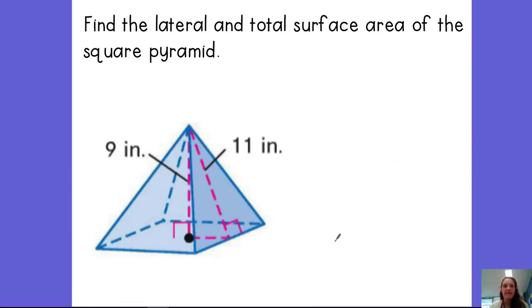So, in this example, we want to find the lateral and total surface area of this square pyramid. So notice, I know the height is 9. And this is my slant height. So my slant height, L, is 11.